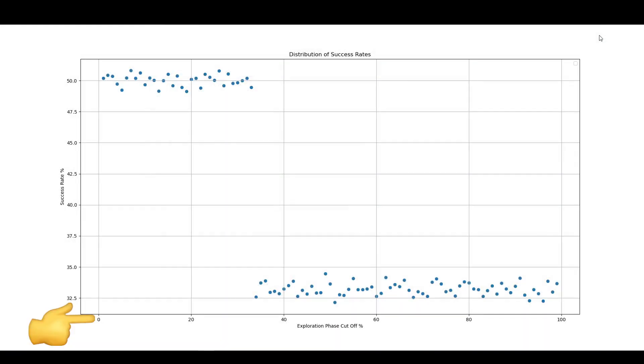The code assesses different cutoffs for the exploration phase and measures the success rate. As you can see, here's the implementation of the three flats example. We got 50% success rate at a 37% cutoff.